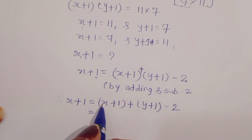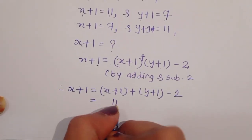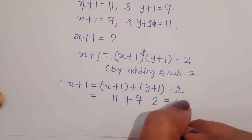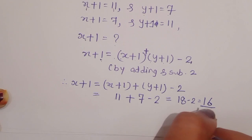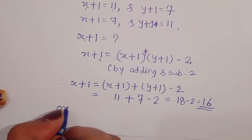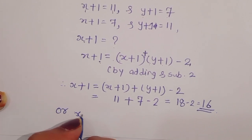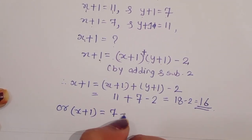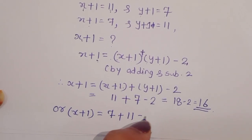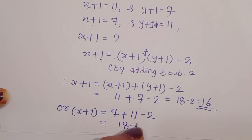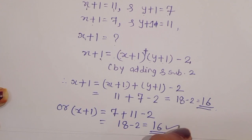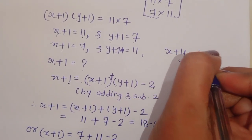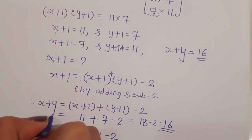To find x plus y, we write x plus y equals (x plus 1) plus (y plus 1) minus 2. In the first case: 11 plus 7 minus 2 equals 16. In the second case: 7 plus 11 minus 2 is also 18 minus 2 equals 16. In both conditions, the value of x plus y is equal to 16.